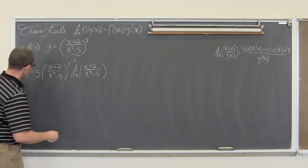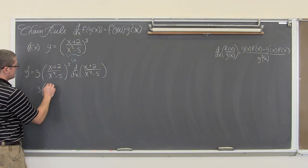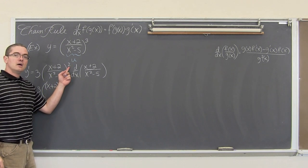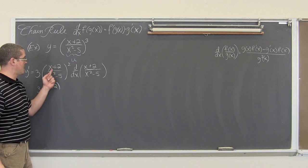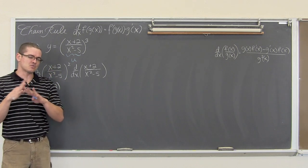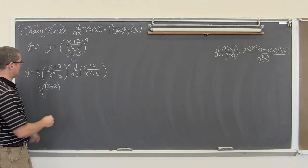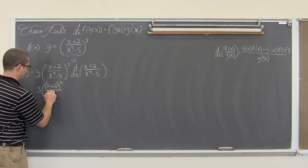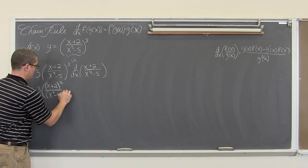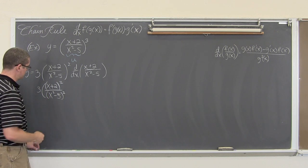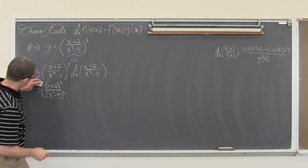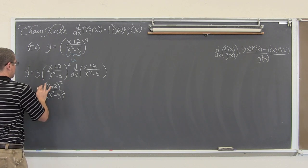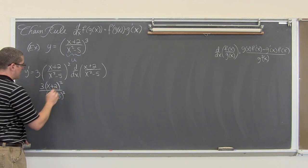So we have 3 times x plus 2, and I am going to apply this power of 2 to the numerator and denominator of the fraction — writing x plus 2 squared over x squared minus 5 squared. Let's go ahead and just put the 3 on top since this is 3 over 1.